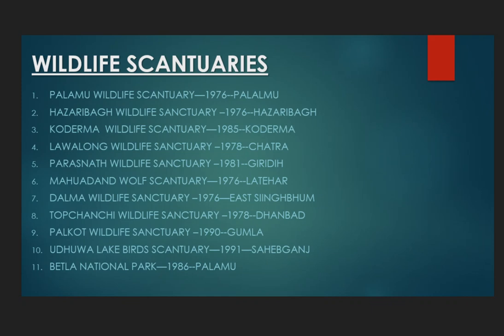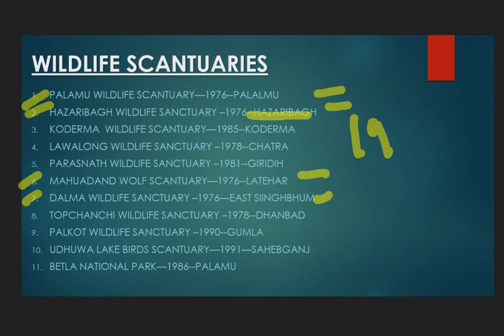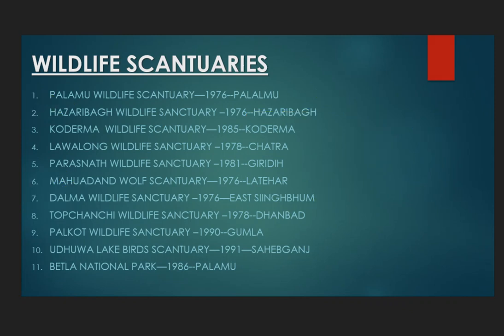The second is Topchanchi Wildlife Sanctuary, also established in 1976. In 1976, four sanctuaries were established: Palamu, Hazaribag, Mahuadanr, Dalma, and Latihar. If you have notes, please comment down below.